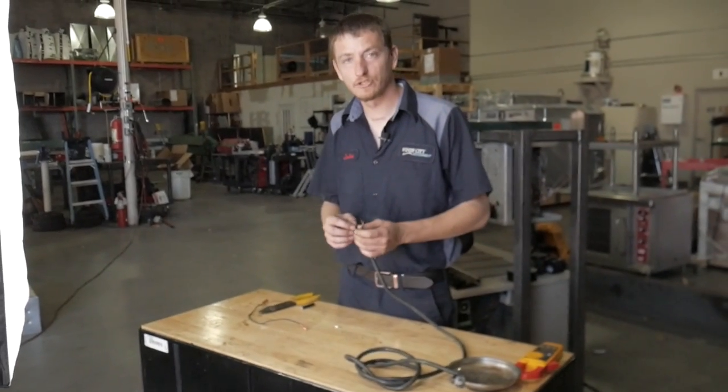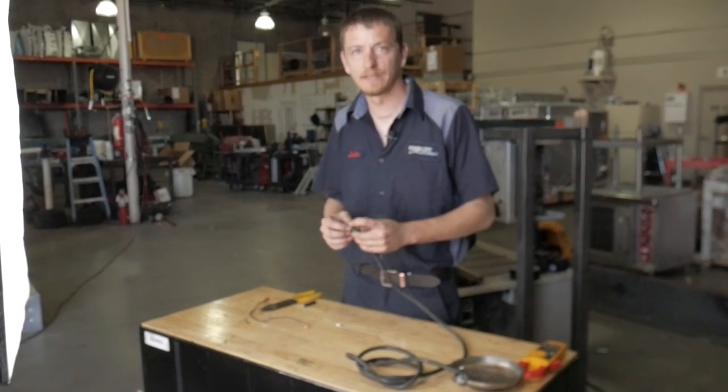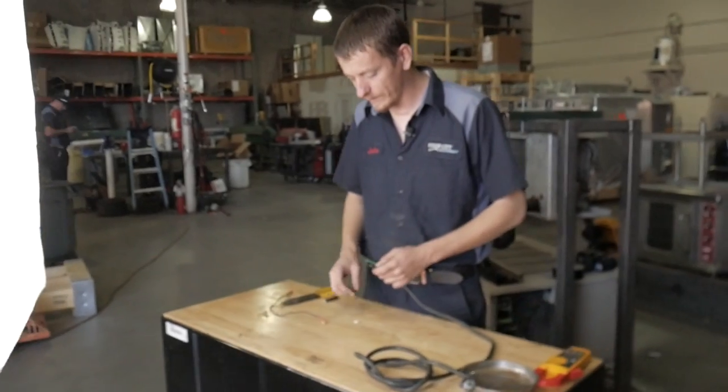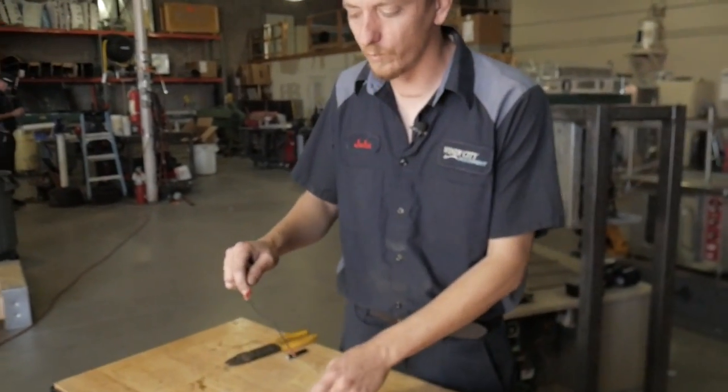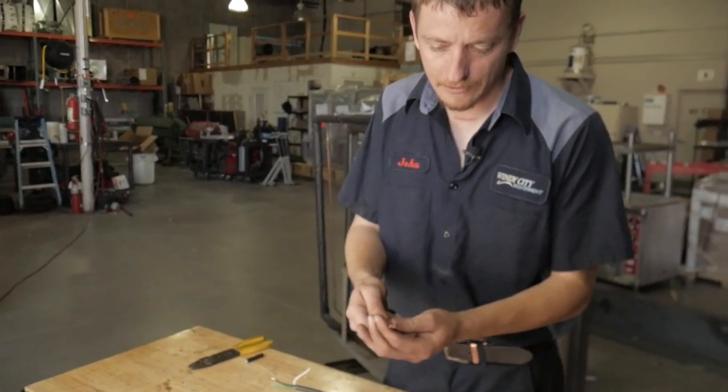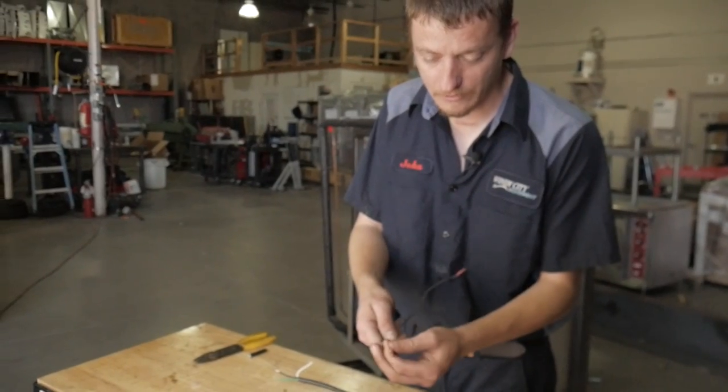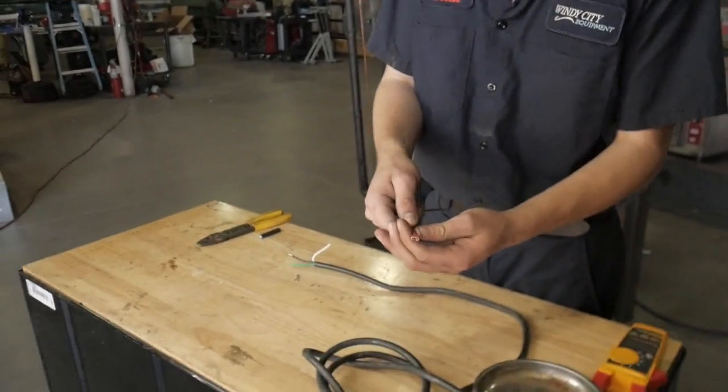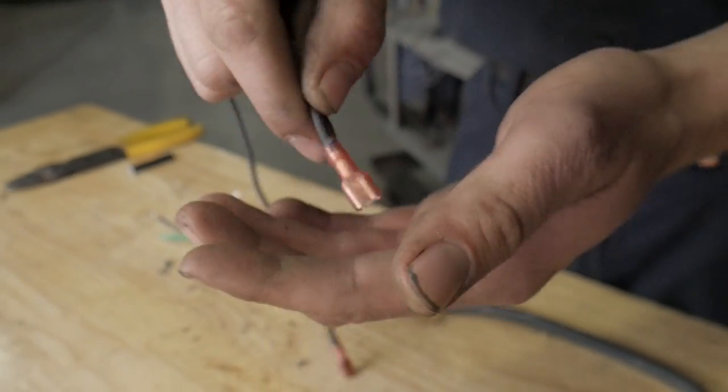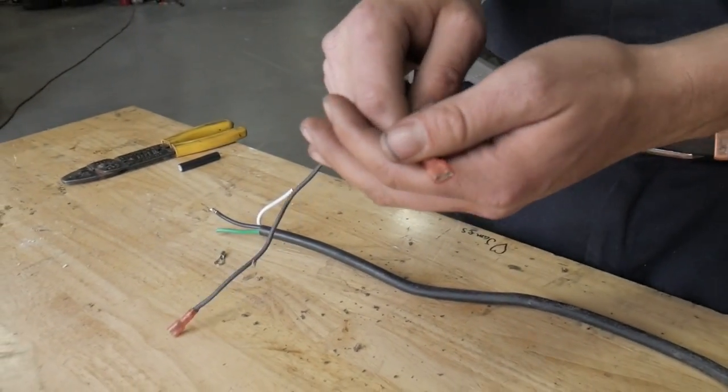Alright, today I'm going to show you how to properly crimp a spade terminal. Here we got a few examples of what this will work on. You got this standard spade terminal right here, it's a female connector. Sometimes these become very loose and don't fit on the terminal properly anymore.